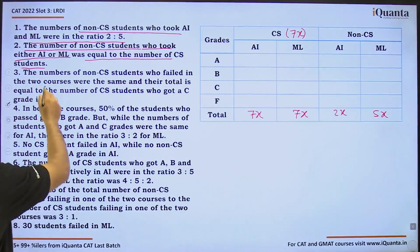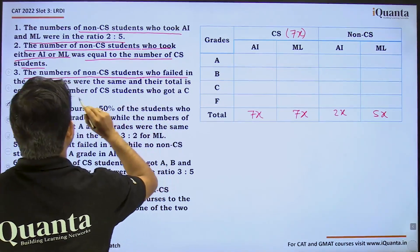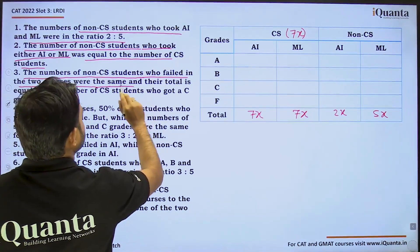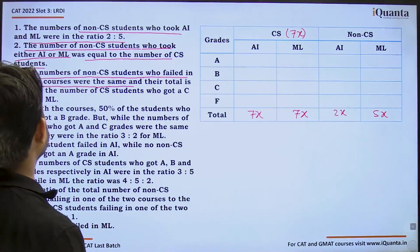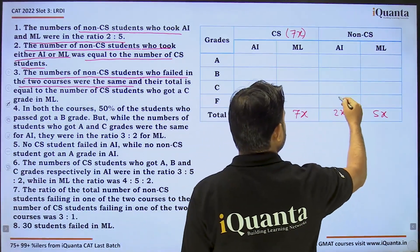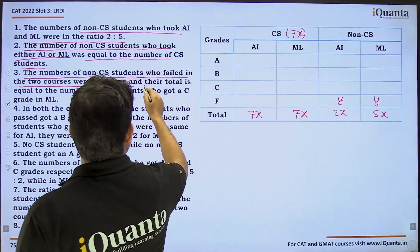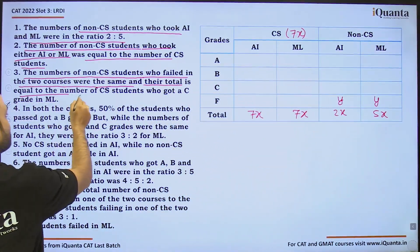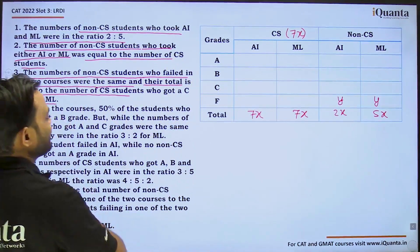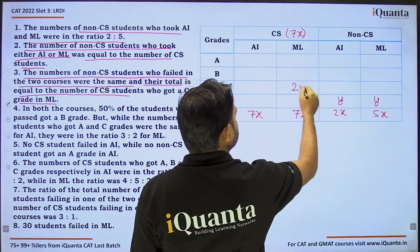The number of non-CS students who failed in the two courses were the same. So if non-CS failures in AI is y, non-CS failures in ML is also y. Their total, 2y, is equal to the number of CS students who got a C grade in ML. So CS C-grade in ML must be 2y.